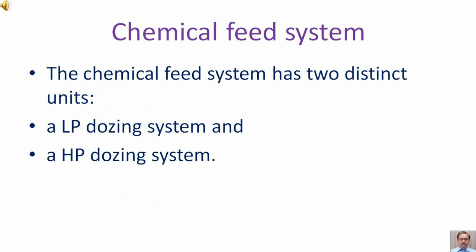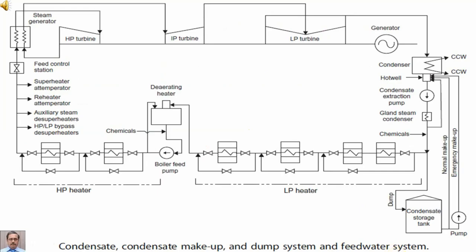The chemical feed system has two distinct units: a low pressure (LP) dosing system and a high pressure dosing system. In this diagram, we are showing two low pressure dosing system points — one is at the suction of the boiler feed pump, and the other is at the condensate header.